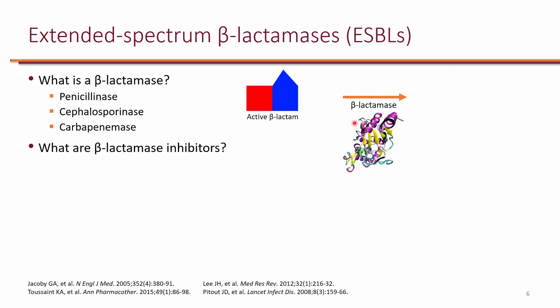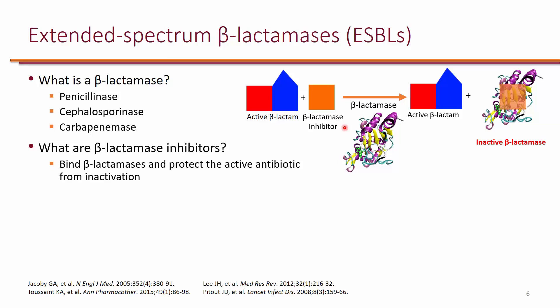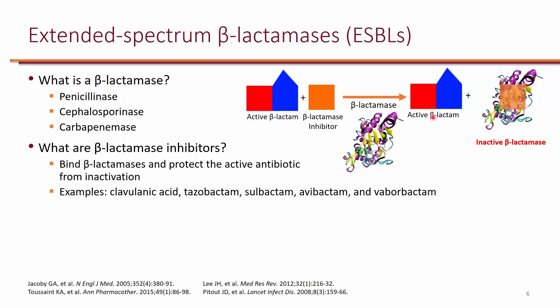Beta-lactamase inhibitors are drugs that mimic the structure of a beta-lactam and have a high affinity for beta-lactamases. The inhibitor binds to and inactivates the beta-lactamase, preventing it from hydrolyzing the beta-lactam ring and thereby preserving the beta-lactam's activity. Available beta-lactamase inhibitors include clavulanic acid, tazobactam, sulbactam, avibactam, and vaborbactam. These agents are not available alone but are combined with beta-lactams.